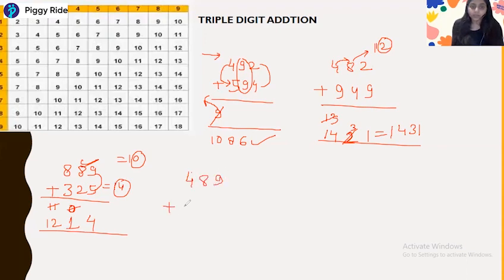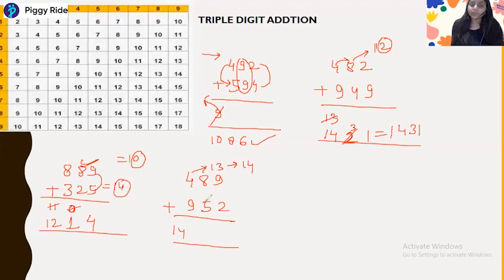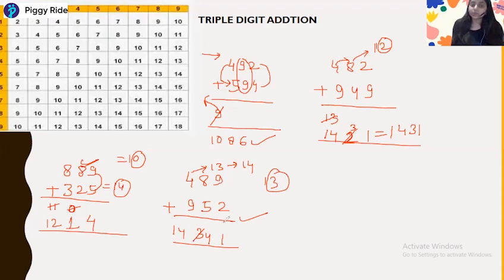Next: 489 plus 952. All carry numbers. 9 plus 4 is 13, increased by 1 gives 14. Then 8 plus 5 is 13 — end number is 3 — increased by 1 (carry from next) gives 4. Then 9 plus 2 is 11 — end number is 1. You can verify: 9 plus 2 is 11, carry 1; 8 plus 5 plus 1 is 14, carry 1; so the answer is 1441.